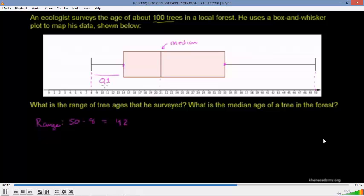This we would call the first quartile, Q1. Roughly a fourth of the trees end up here. A fourth of the trees are between 14 and 21. A fourth are between 21 and 33. And then a fourth are in this quartile. So we call this the first quartile, the second quartile, the third quartile, and the fourth quartile. So to answer the question, we already did the range. There's a 42 year spread between the oldest and the youngest tree. And then the median age of a tree in the forest is at 21.